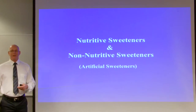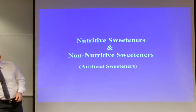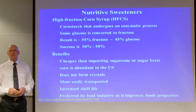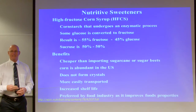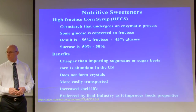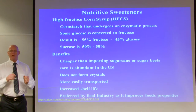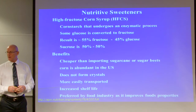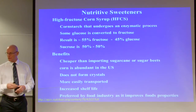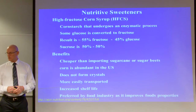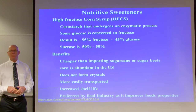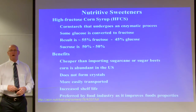Nutritive sweeteners and non-nutritive sweeteners — also referred to as artificial sweeteners. Nutritive sweeteners yield some energy. High fructose corn syrup is a corn starch that undergoes an enzymatic process where some glucose is converted to fructose, making it sweeter. In sucrose, glucose and fructose are at about a 50-50 ratio; high fructose corn syrup tips that ratio. Benefits include being cheaper than importing sugarcane, corn being abundant in the US, no sugar crystal formation, easier transport, increased shelf life, and improved baking properties.